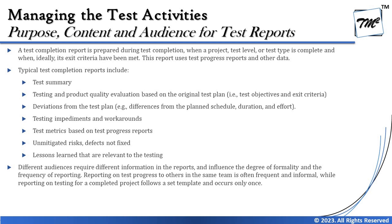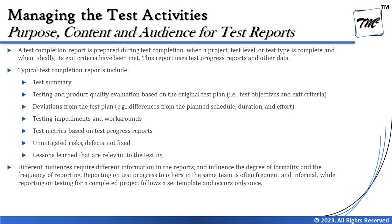Similarly, the test completion report covers a bigger milestone — it could be done at the end of a project or release. The test completion report is prepared when a project, test level, or test type is complete and exit criteria have ideally been met. It uses data from test progress reports and other sources. Typical content includes a full test summary, and testing and product quality evaluation based on the original test plan — how many objectives and exit criteria were fulfilled.